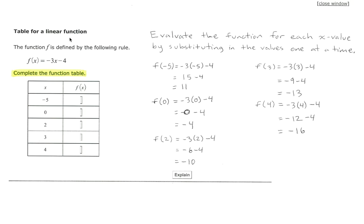Let's determine the values of a table for a linear function by evaluating the function for each of the given values of x. Our function here is f(x) equals negative 3x minus 4. Again, this is read f(x) equals negative 3 times x minus 4.